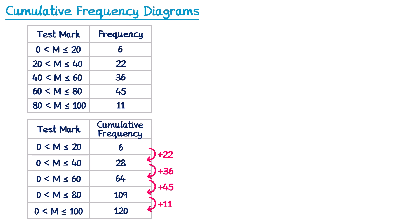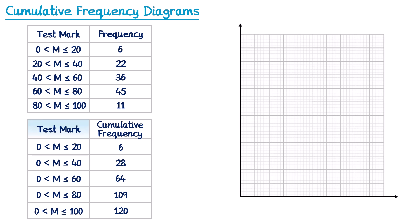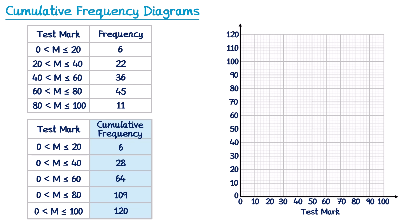So this is the completed cumulative frequency table. You'll then almost certainly be asked to use this information to draw a cumulative frequency diagram. We take some axes and put the test marks along the bottom, going from 0 to 100, labelled as test mark. The cumulative frequency always goes on the vertical axis — since it goes up to 120 we make sure to go at least that high, and we label it cumulative frequency.